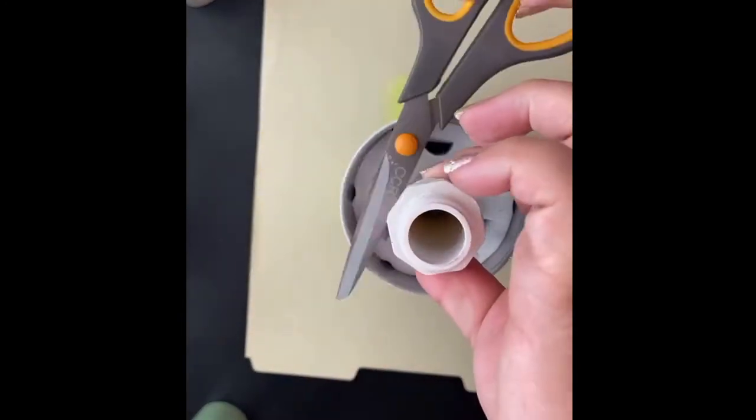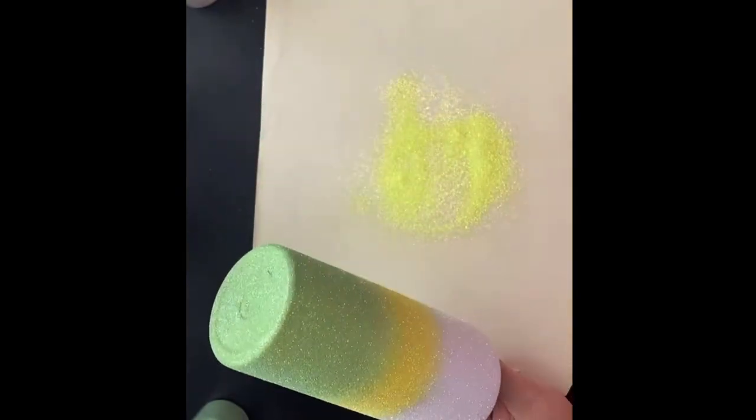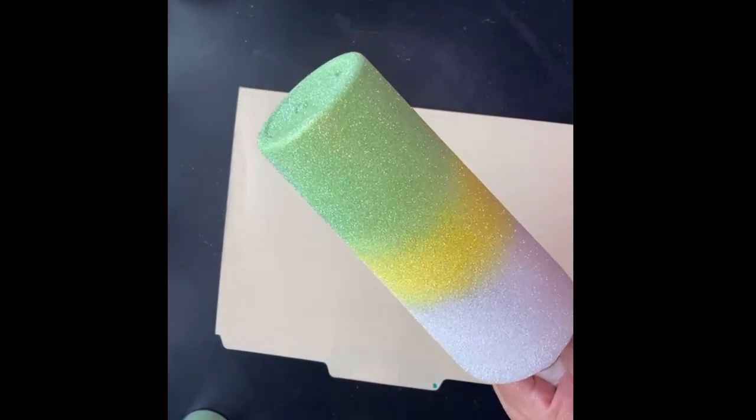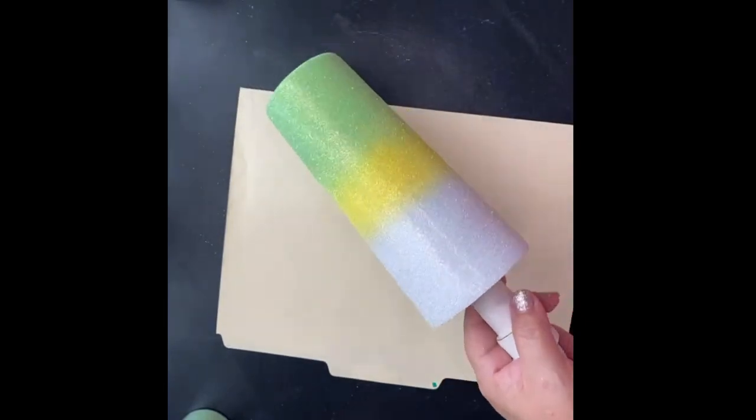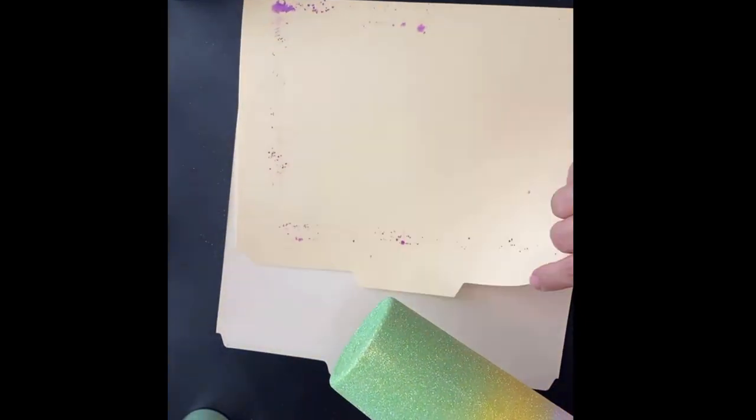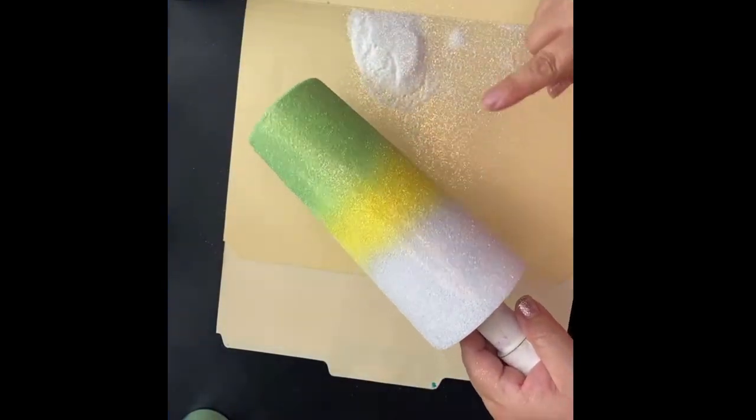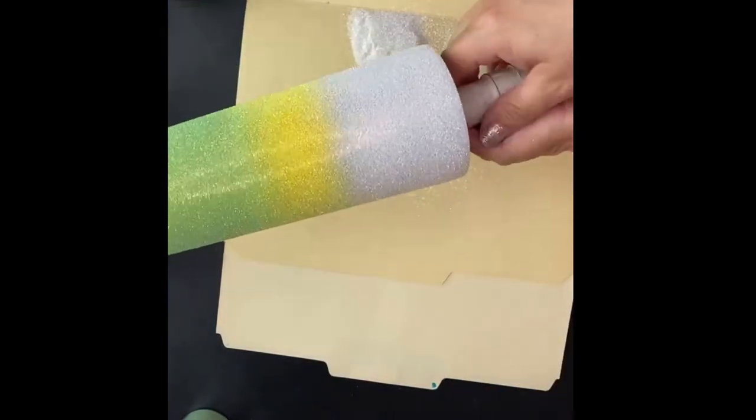Once I'm happy with that center coverage, I'm going to tap off the excess and take a good look at it and see if I need to add any green or white to it. And I do see some areas that I don't have completely blended that I want to add some white to to really create that great transition.